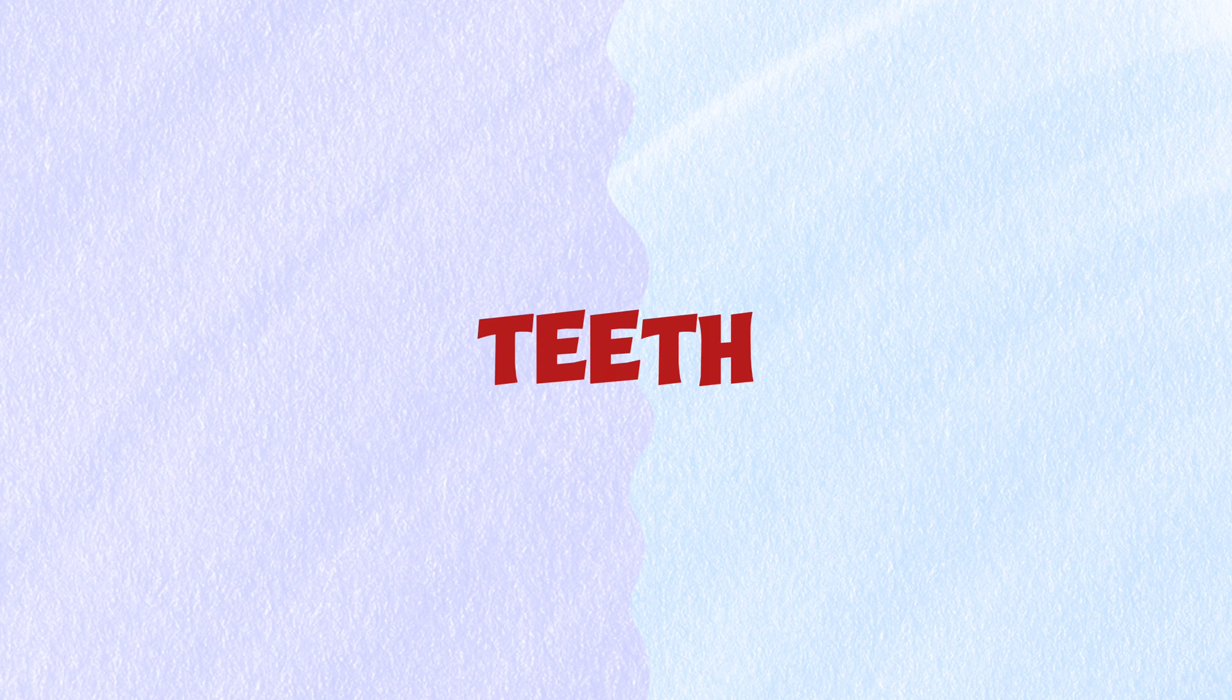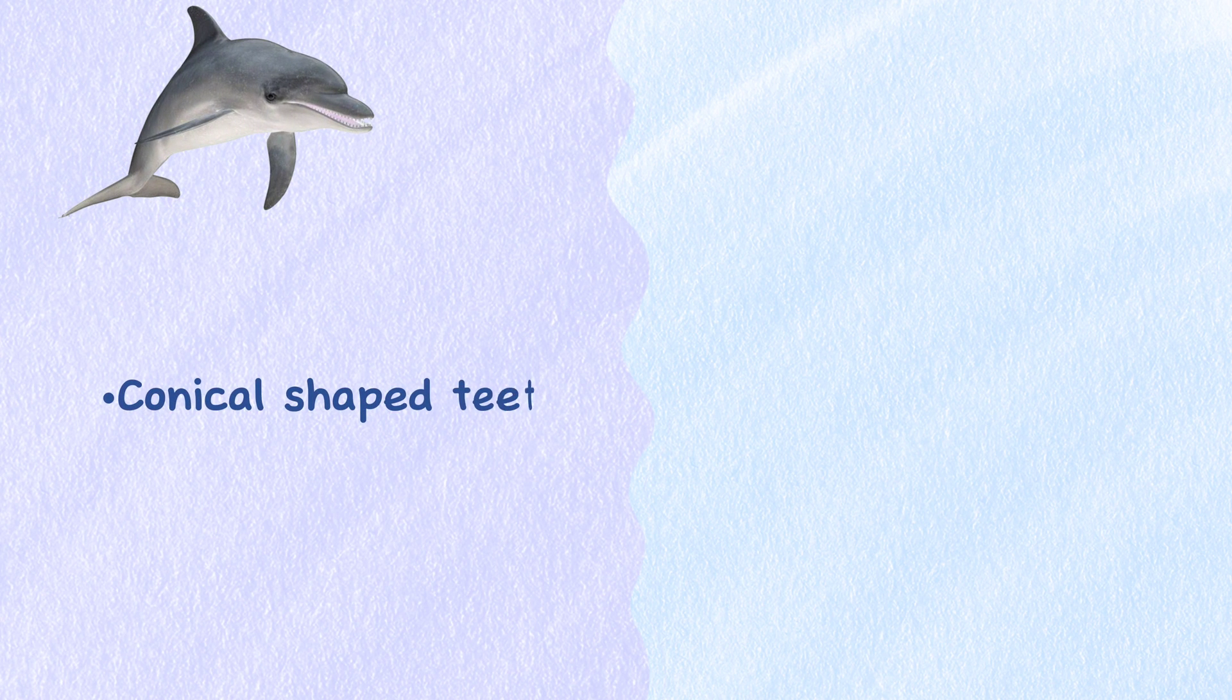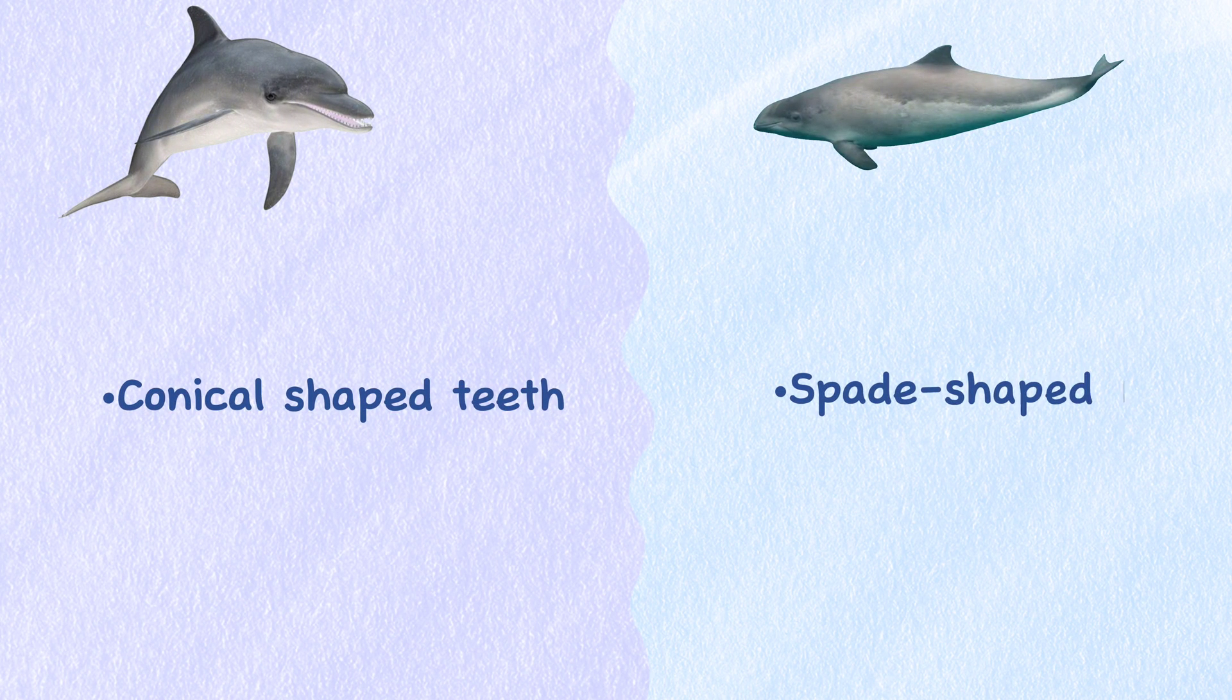Teeth. Dolphins have conical-shaped teeth, while porpoises have spade-shaped or flat teeth.